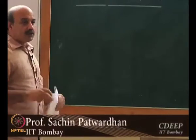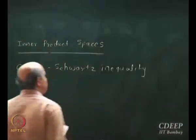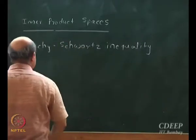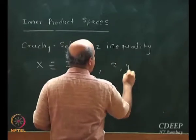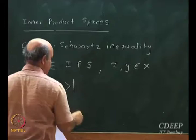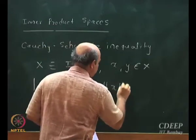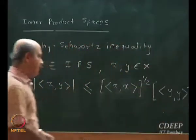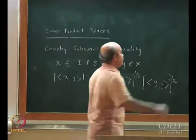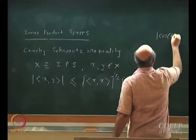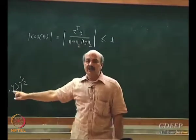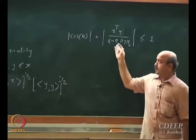The Cauchy-Schwarz inequality states that if I am given an inner product space X and I take any two elements X and Y that belong to X, then the absolute value of the inner product between X and Y is always less than or equal to the product of their norms. We proved this fundamental inequality, which is a generalization of the result involving cosine theta from three dimensions.